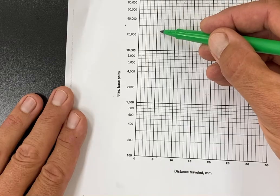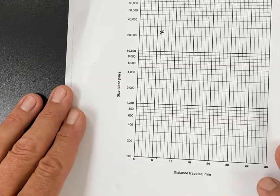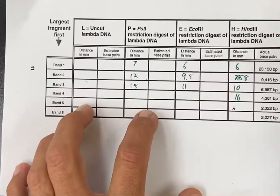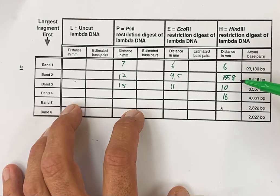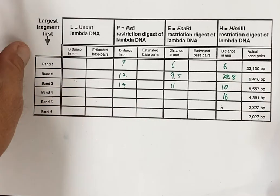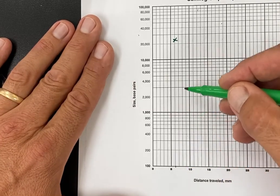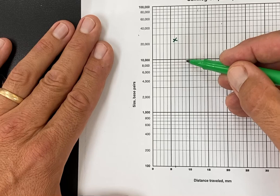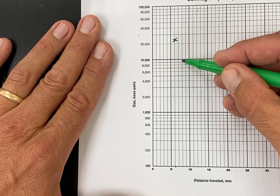My next band was at 8 millimeters and that's about 9,400 base pairs. I'm going to come back here to 8 millimeters, 9,400. So there's 8,000, 9,000, 9,400 is going to be somewhere right in here.